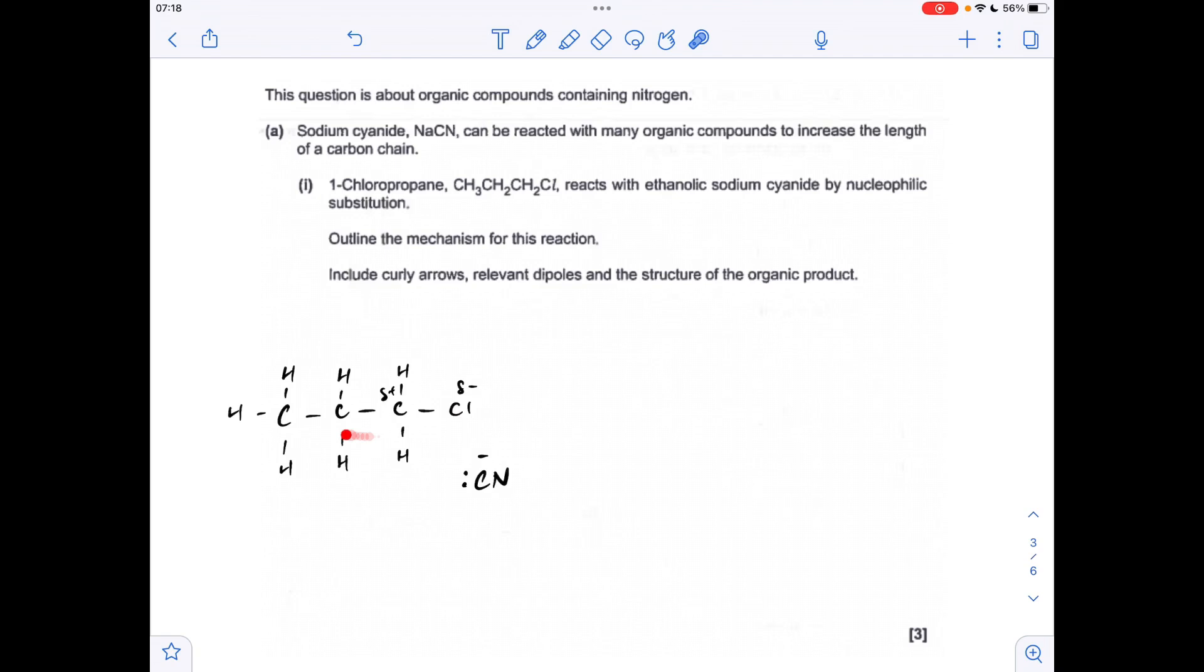Moving on to the main question now. So we've got our 1-chloropropane here. Dipole across the C-Cl bond. And the cyanide ion is the one that's going to react with it. Obviously that's coming from the ethanolic sodium cyanide. So we need to take a curly arrow from the lone pair on the carbon of the CN- to that slightly positive carbon. And that will break that C-Cl bond by heterolytic fission. So that's going to generate these. So the organic product is called butane nitrile. And when this C-Cl bond breaks, obviously it picks up the electron pair from the bond and becomes a Cl- ion.